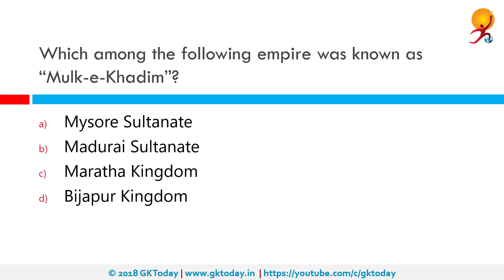Which among the following empires was known as Mulke Khadir? The correct answer is the Maratha Kingdom. The Maratha Empire, or the Maratha Confederacy, was an Indian power that dominated much of the Indian subcontinent in the 17th and 18th centuries. The empire formally existed from 1674 with the coronation of Chhatrapati Shivaji and ended in 1818 with the defeat of Peshwa Bajirao II.